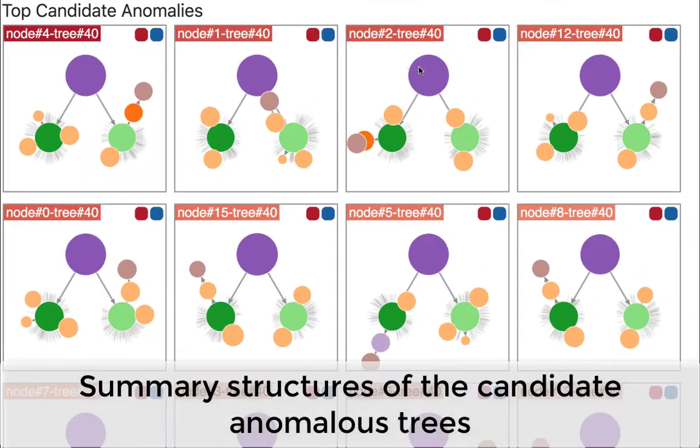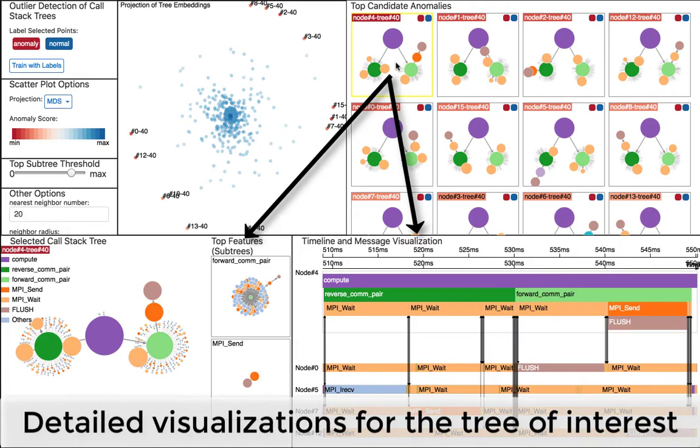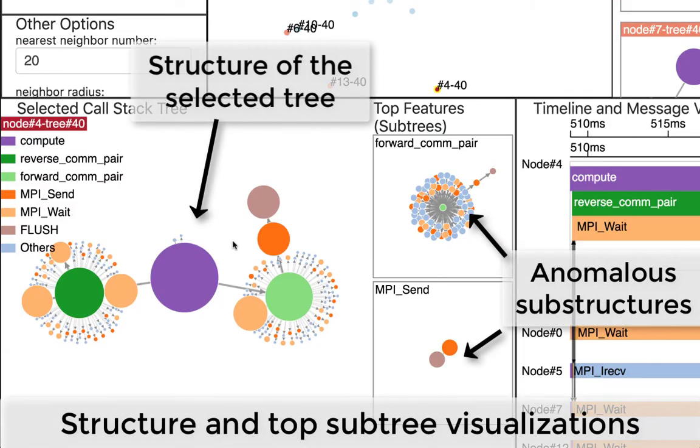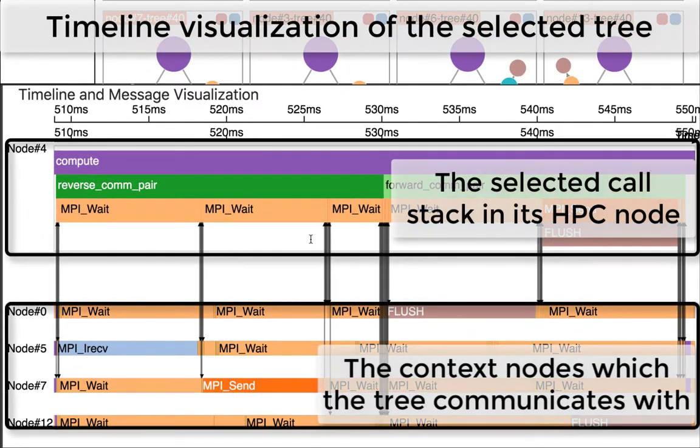Summary structures of the top candidate anomalies from the scatter plot are visualized. For the selected tree, the user can investigate its detailed structure and the anomalous subtrees. The timeline shows the execution structure and the messages between the HPC nodes.